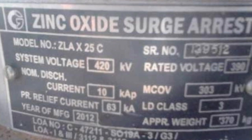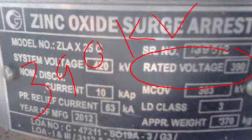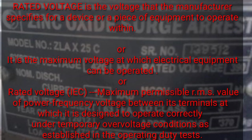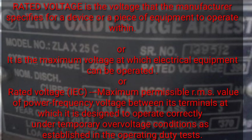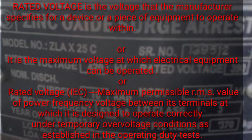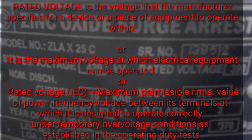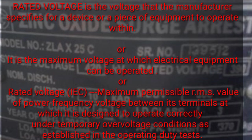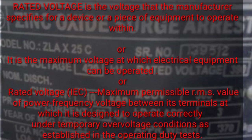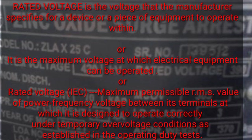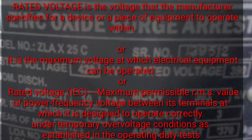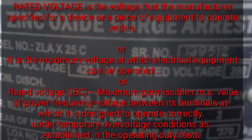Now move on to rated voltage, which is 390 kilovolts. Rated voltage is the voltage that the manufacturer specifies for a device or piece of equipment to operate within, or it is the maximum voltage at which electrical equipment can be operated. According to IEC — International Electrotechnical Commission — rated voltage is the maximum permissible RMS value of power frequency voltage between its terminals at which it is designed to operate correctly under temporary overvoltage conditions as established in the operating duty tests.